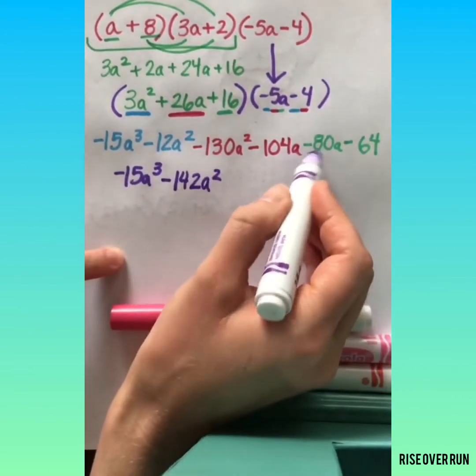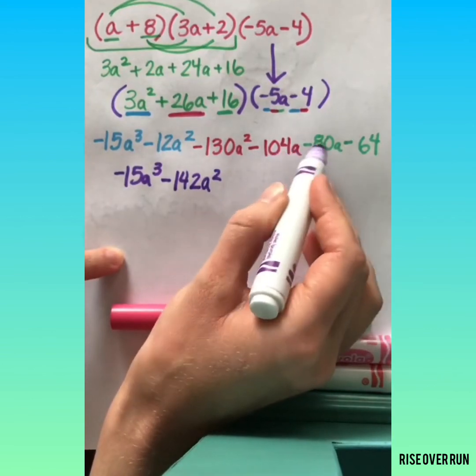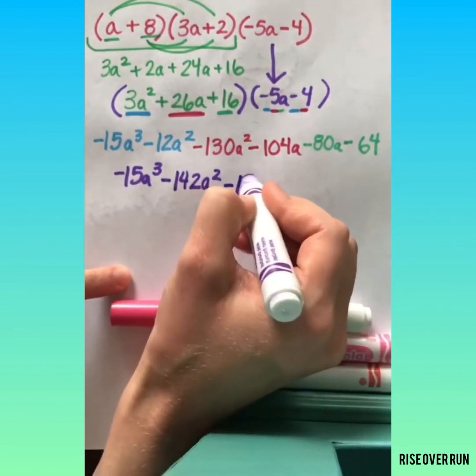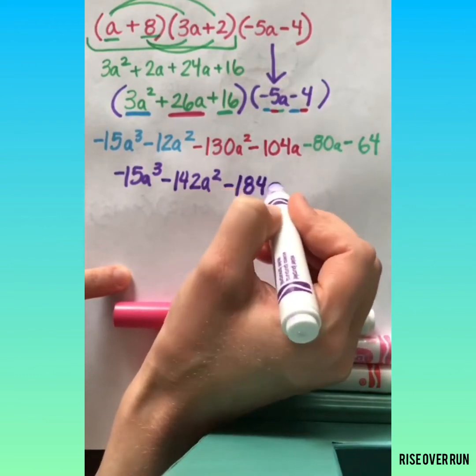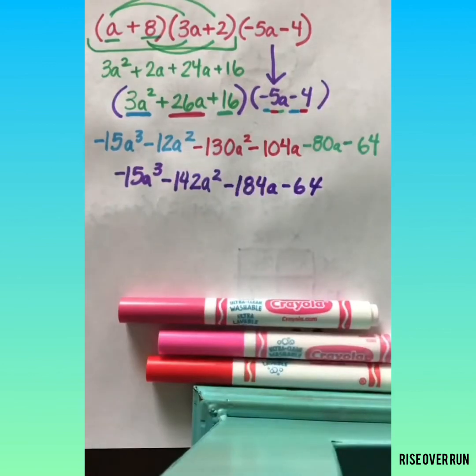Then I have two terms that have just an A. So I have a negative 104A and a negative 80A. Those combine for a negative 184A. And then my constant of negative 64.